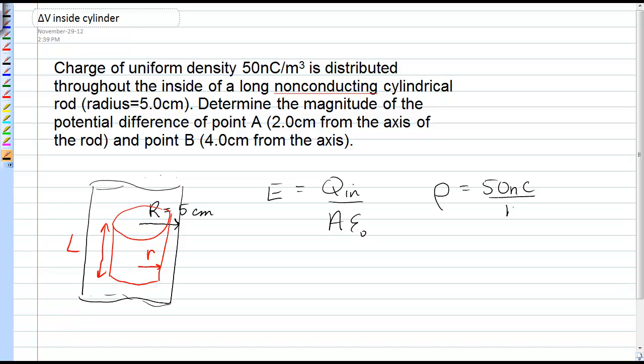Which means in order to get the charge inside that cylinder, we're going to use the volume charge density times the volume of that red cylinder, over A epsilon naught.